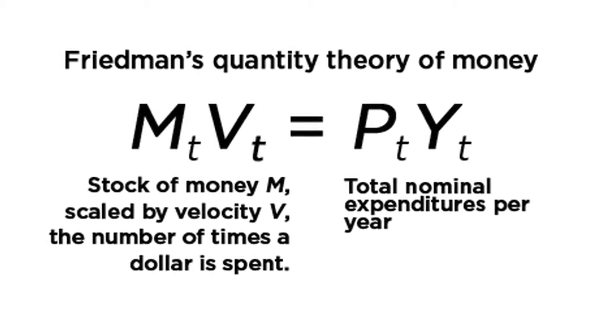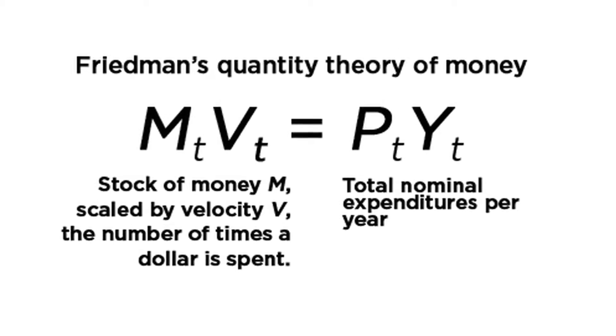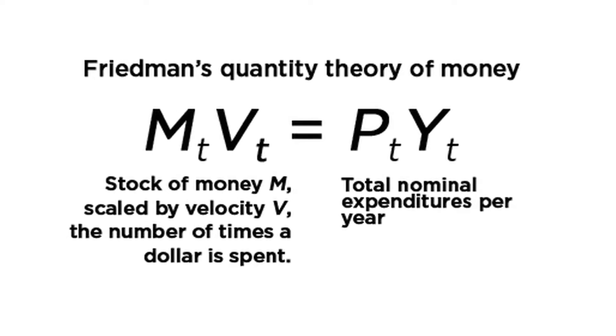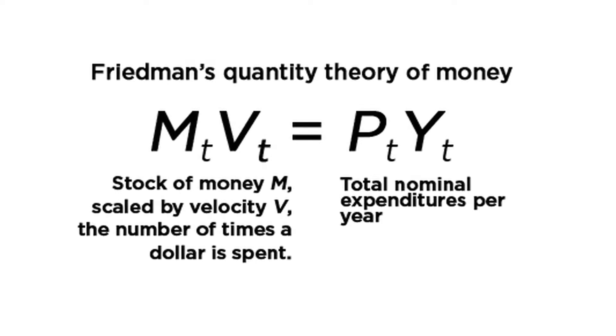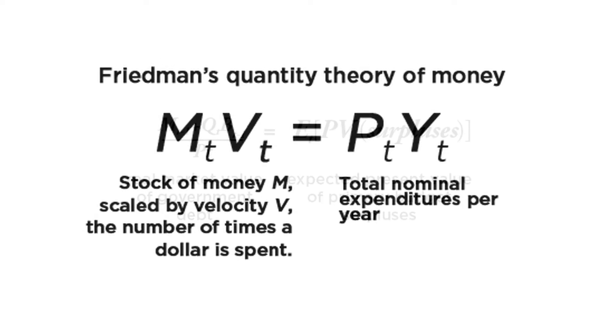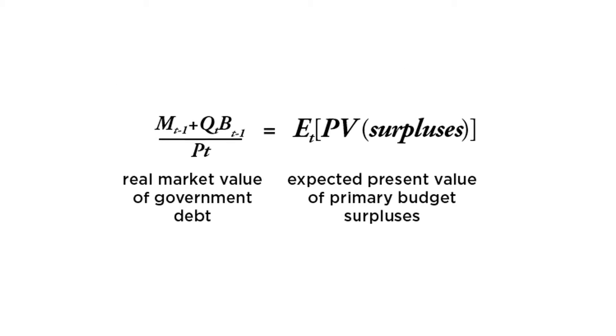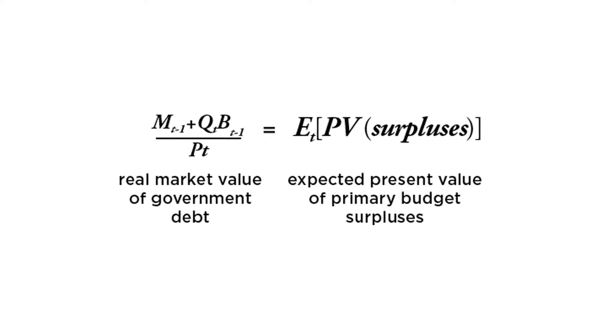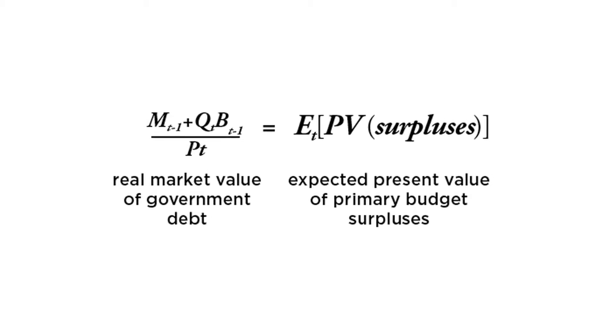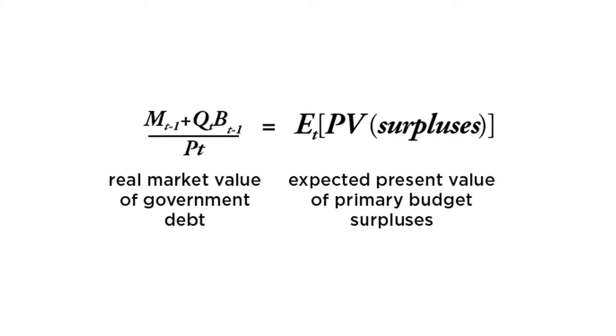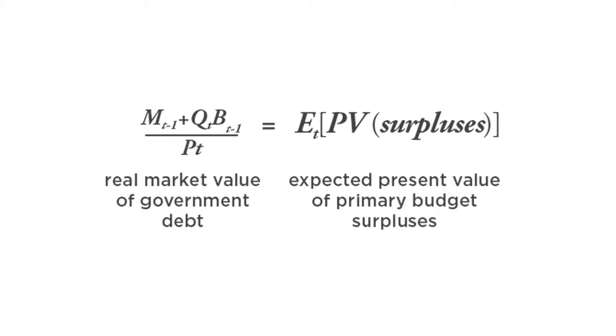The quantity theory of money was an attempt to understand the evolution of the price level — the evolution of inflation — through one equation, the very famous MV equals PT. Actually, you need more than one equation to understand the world. I think the fiscal theory of the price level could be helpful in that, because it brings another equation to bear: the idea that the real value of government debt today should equal the present value of the real primary surpluses the government is collecting. But trying to understand the world only through that equation is also a mistake.